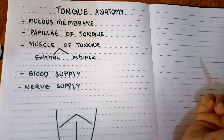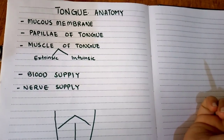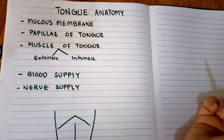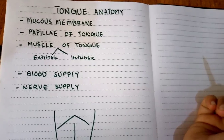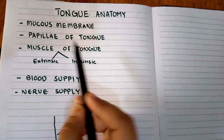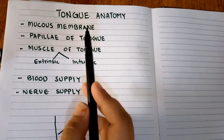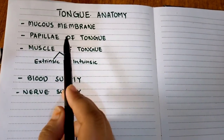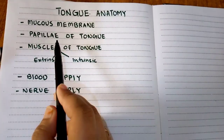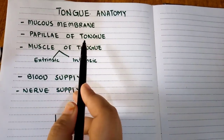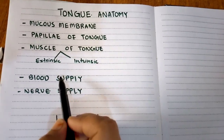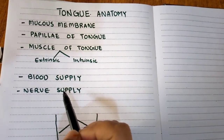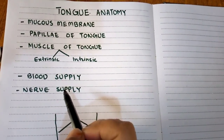Today's lecture we will discuss the anatomy of the tongue. This lecture includes tongue anatomy, mucous membrane of the tongue, papillae of the tongue, muscles of the tongue, and blood supply and nerve supply of the tongue.